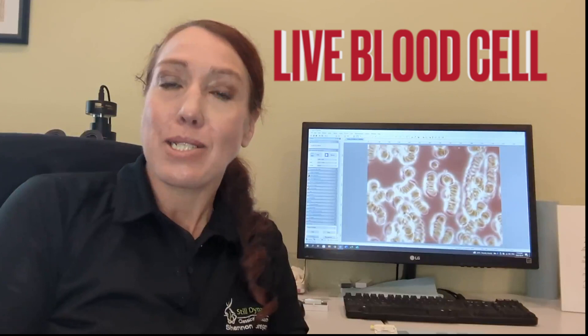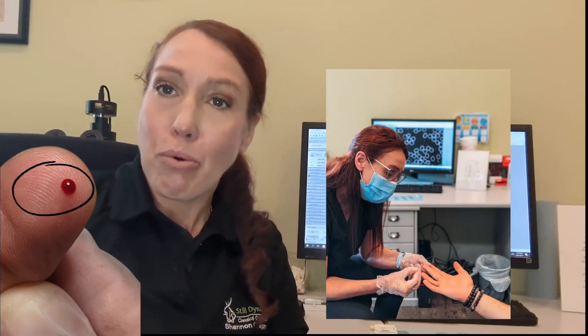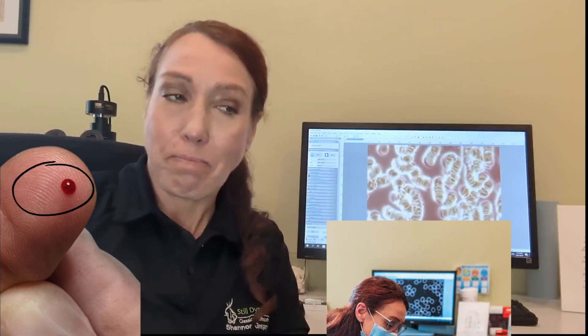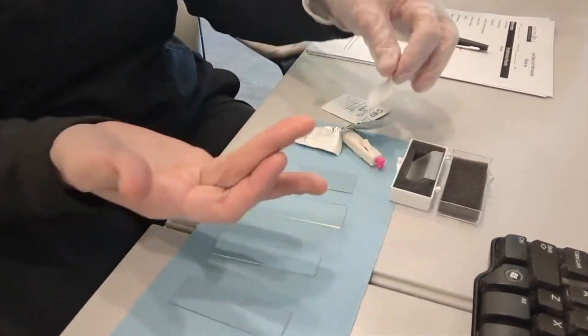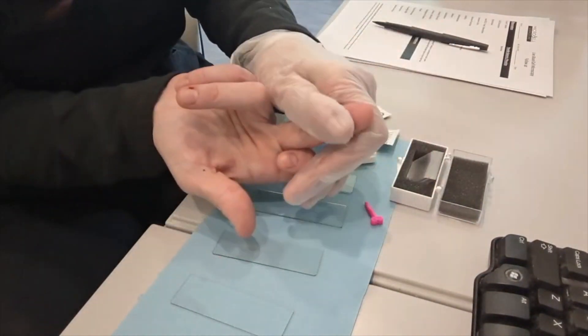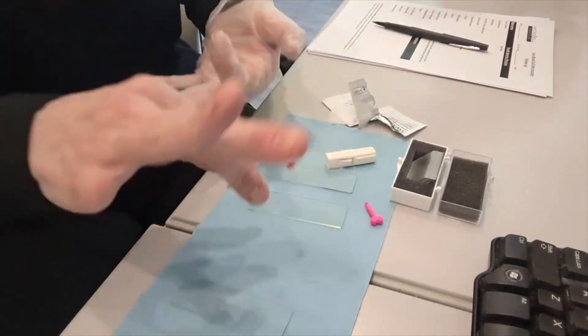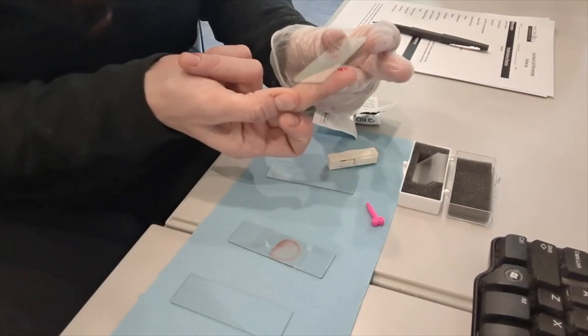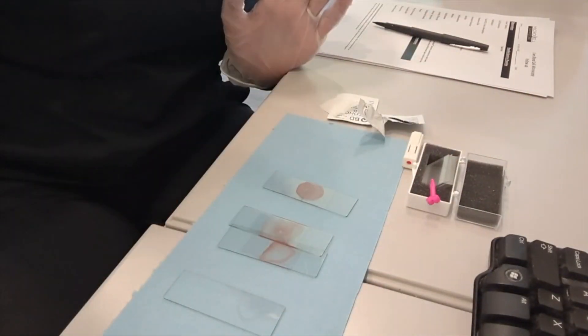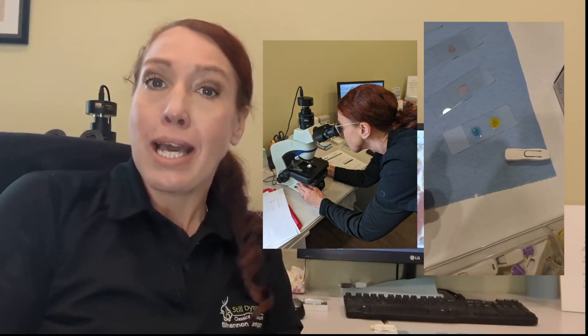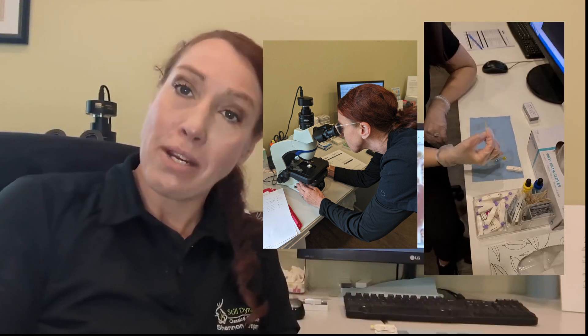So first of all, live blood cell, we do take a small pinprick sample of your blood. We take it from the finger and then we spread it on numerous slides. It's very important that we do take numerous samples. We take up to three and four to look at as there's a lot of investigation that has to happen here. I'm looking at what is happening in the terrain of the blood cells.